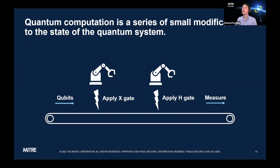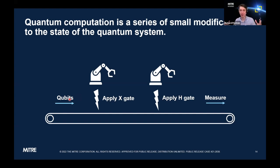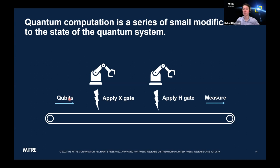Remember that as you're doing computation, qubits can be in superposition — that half-zero, half-one state. But once you measure, that's all out the window — you're either a zero or a one.